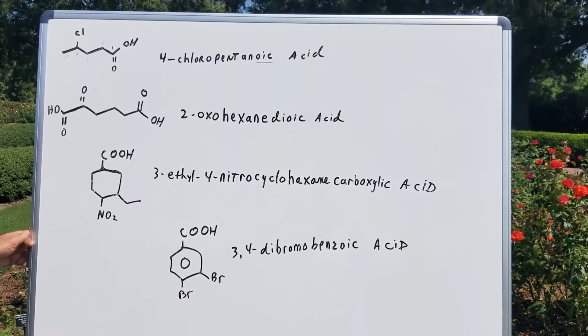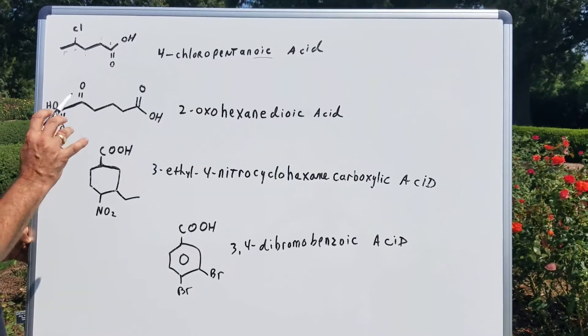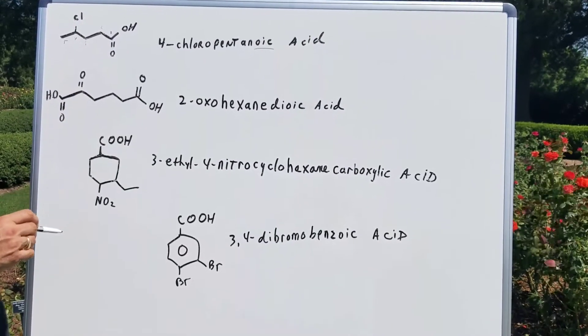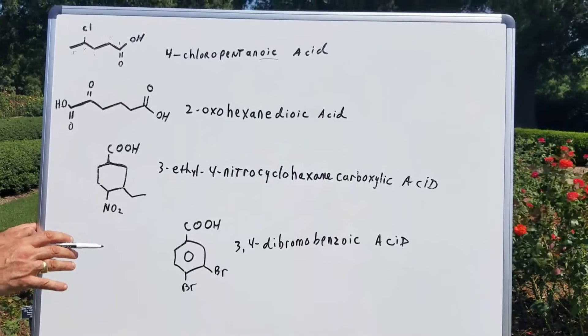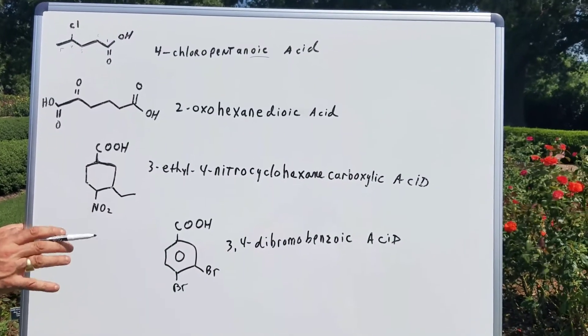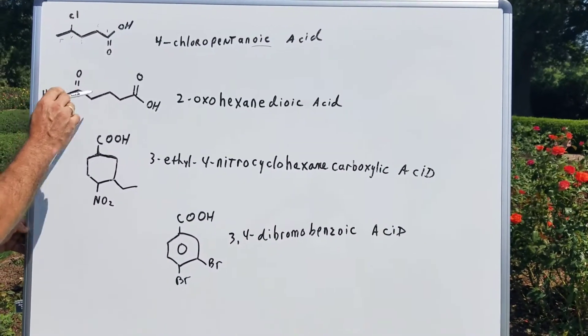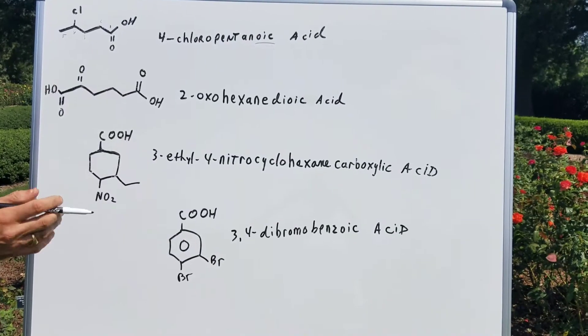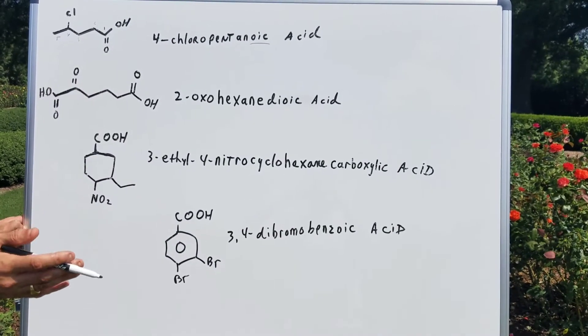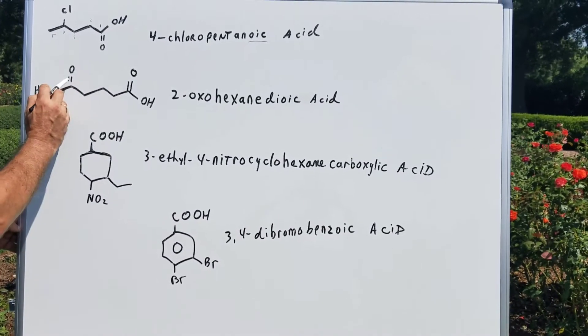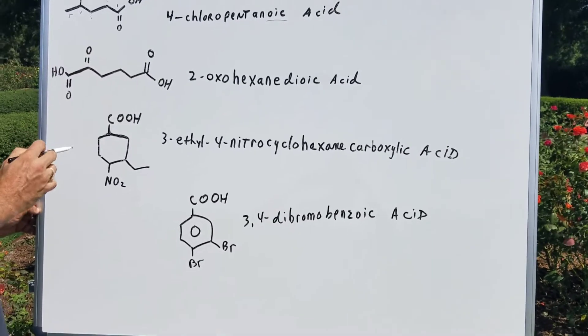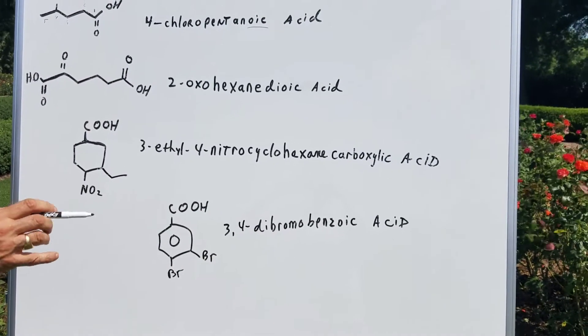The second one is much more difficult. What we want to do is to note that there's two carboxy acids. So therefore, if there's two carboxy acids, it's called a dioic acid. Well, there's six carbons. So that's going to give you a hexane dioic acid. Now, what the hell is a double bond O as a substituent? We call it oxo.